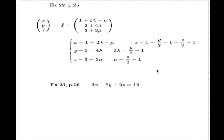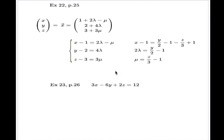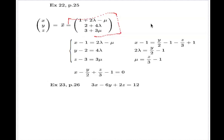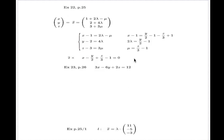Bringing everything together — all x's, y's, and z's in one place — the Cartesian equation of the plane becomes: x minus y/2 plus z/3 equals negative 1. That's the Cartesian equation of this plane. You can also read off the normal vector directly: its components are 1, negative 1/2, and 1/3.